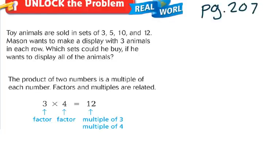Let's turn to page 207 in our textbook and take a look at the Unlock the Problem. It says: toy animals are sold in sets of 3, 5, 10, and 12. Mason wants to make a display with 3 animals in each row. Which set could he buy if he wants to display all the animals? The product of two numbers is a multiple of each number — factors and multiples are related. We have a factor and a factor, and 12, which is our product, is a multiple of 3 and a multiple of 4.